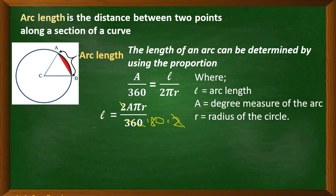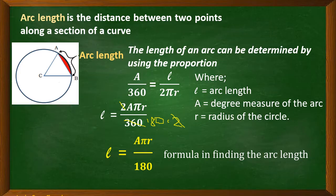we will be using this derived formula, arc length. So, in here, in our numerator, we only have AπR.